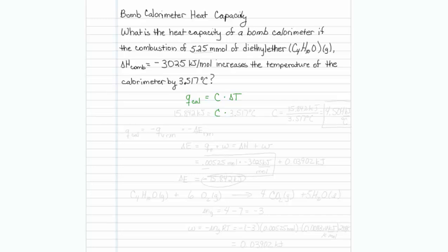the heat capacity is what we're trying to solve for, and we have to figure out q calorimeter, so I will fill in my 3.517 degrees Celsius, and all I need to finish this equation is to figure out the heat change of the calorimeter.